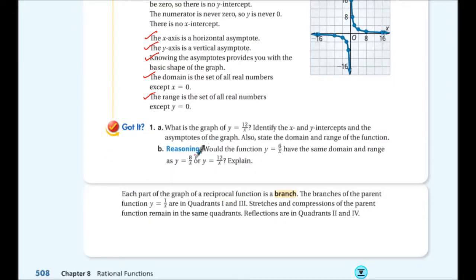The domain is all set of real numbers except for x can't be zero, and the range is all set of real numbers except for y can't be zero. That's specifically for the parent function. Those numbers can change. So, Got It 1a: What is the graph of 12 over x? Identify the x and y-intercepts and the asymptotes of the graph, also state the domain and range. And then, would the function y equals 6 over x have the same domain and range as 8 over x and 12 over x? Explained. Go ahead and pause the video here and answer those questions.